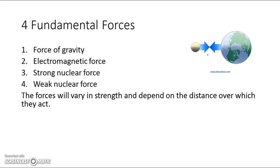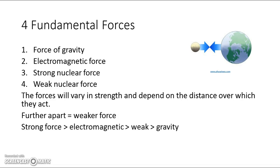The electromagnetic force is similar to magnetic forces — you have poles pulling together. The further apart objects are, the weaker the force will be. The moon gravitates around the earth because it's close; if the moon were further away, the force of gravity would be weaker and it would just go away. In terms of relative strength, the strong force is greater than electromagnetic, which is greater than the weak force.